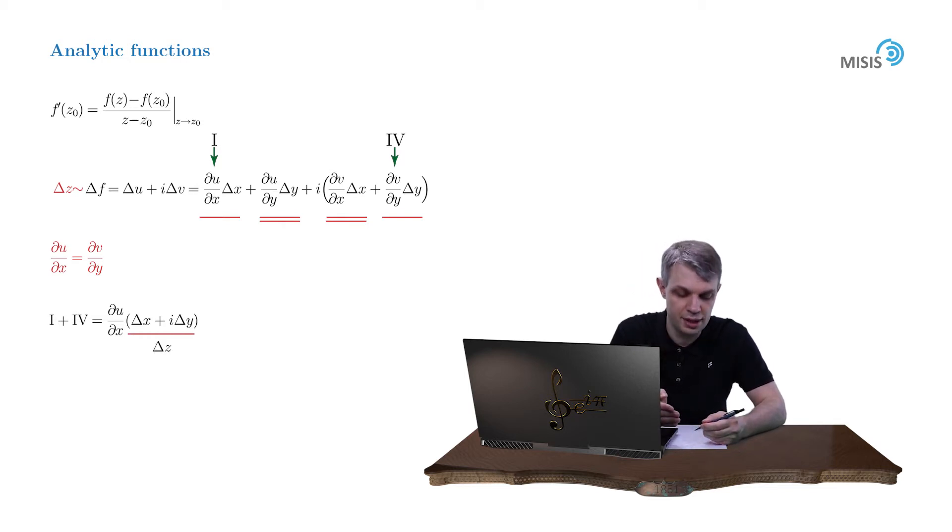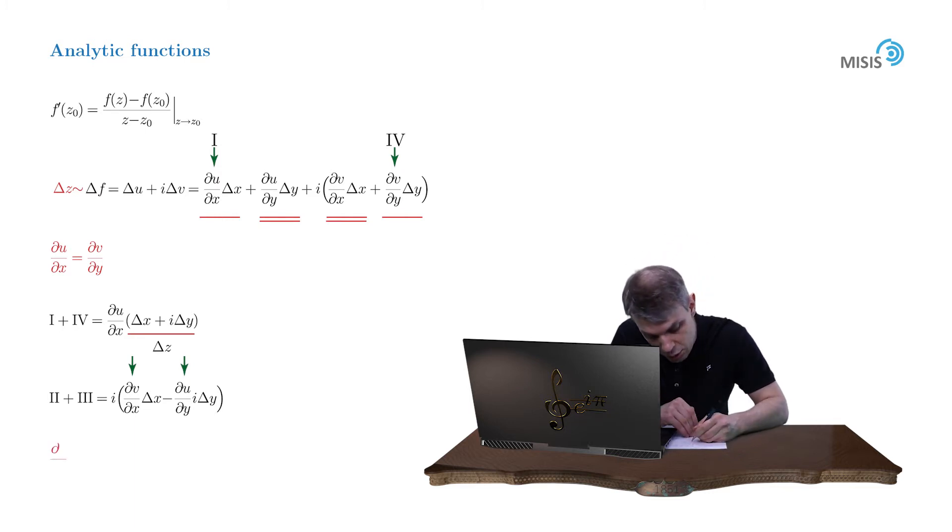Now let us try to reorganize the combination of the second and third term in a similar manner. For convenience we factor out i to obtain dv/dx times delta x minus du/dy times i delta y. And again we have the necessary constituents delta x and i delta y with different pre-factors: dv/dx and minus du/dy. So let us require them to be equal to each other: dv/dx equals minus du/dy. This way we factor out dv/dx and obtain the same desired combination delta x plus i delta y, which is delta z.